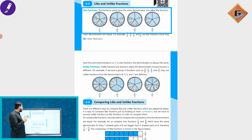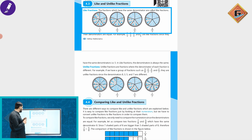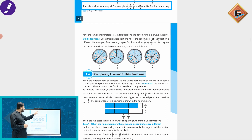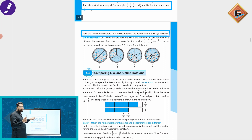Like fractions: the fractions which have the same denominator are called like fractions. For example, 5/23, 5/43, and 54/58 are like fractions because their denominators are equal. Another example: 1/5, 2/5, and 4/5 are like fractions since they have the same denominator 5.